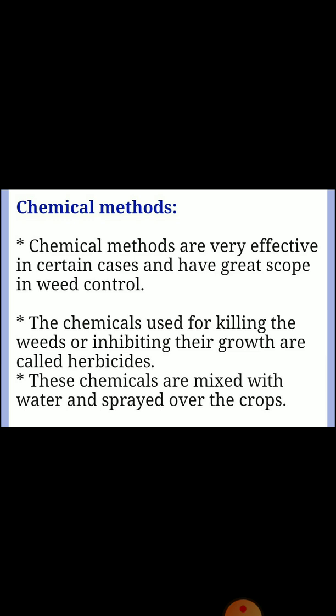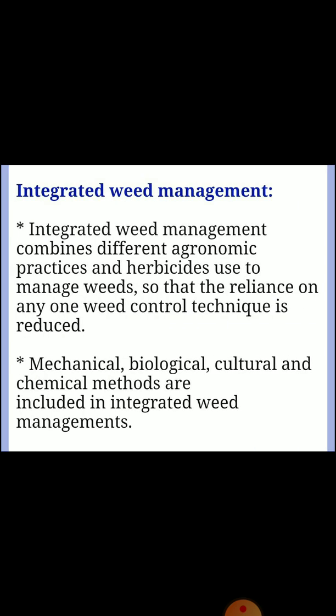Chemical methods are very effective in certain cases and have great scope in weed control. The chemicals used for killing weeds or inhibiting their growth are called herbicides; these are mixed with water and sprayed over the crops. Integrated weed management combines different agronomic practices and herbicides to manage weeds so that reliance on any one weed control technique is reduced. Mechanical, biological, cultural, and chemical methods are all included in integrated weed management.